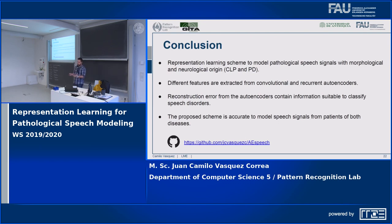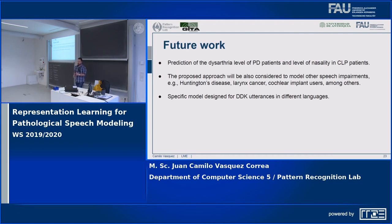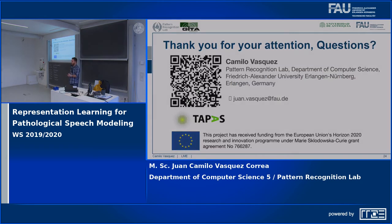For future work, I plan to adapt these models for predicting the disorder level in Parkinson's disease patients and the nasality level in cleft lip and palate subjects. I would also like to apply this approach to other speech impairments like Huntington's disease, laryngeal cancers, or cochlear implant users. Finally, I plan to design a specific model for the diadochokinetic utterances — the rapid repetition of 'pataka' — since it is a very important task used to evaluate patients with neurodegenerative diseases.